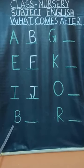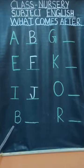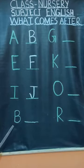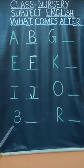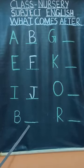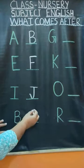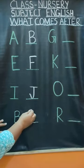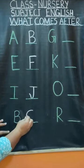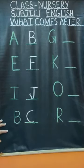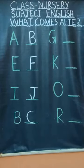Now tell me, what is this? This is B. So now tell me, what comes after B? Yes — C for Cat. So you will write C for Cat on the blank space.